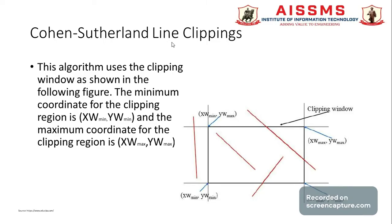The line clipping algorithm uses a clipping window. Whatever part or lines are completely outside of your window will be neglected. If the line is partially visible or partially inside the window, you have to clip that line. In this diagram, we have the clipping window, and these are the different lines that are partially inside, completely outside, or completely inside. The role of line clipping is to cut the lines at intersection points — those lines that are completely or partially outside the window.